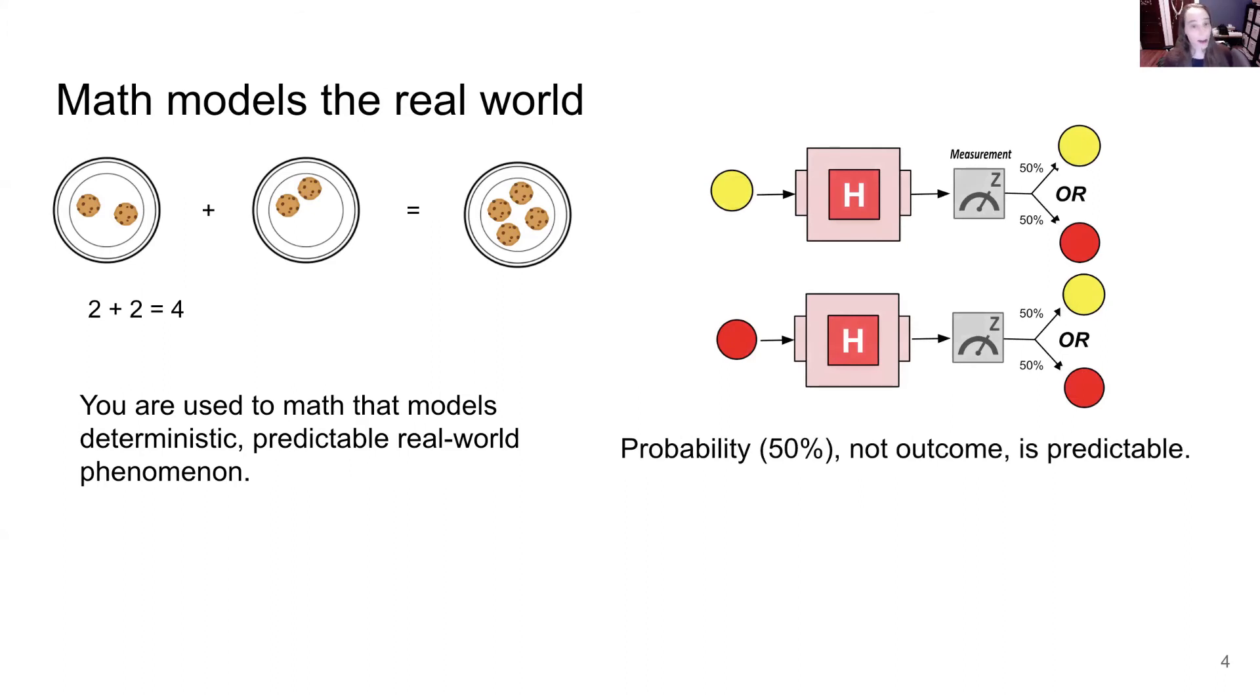So what you saw in the game were these tokens that had a certain probability. We actually have mathematical operations called a quantum operation called an H gate, which takes something that is deterministic and predictably a hundred percent going to be an outcome of,